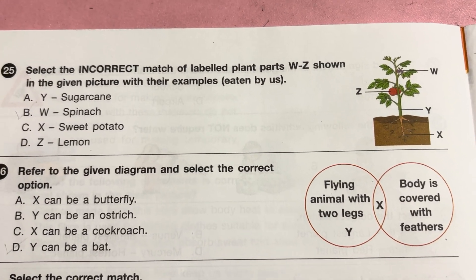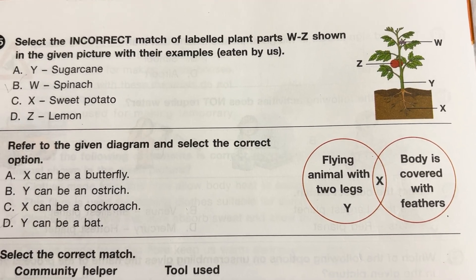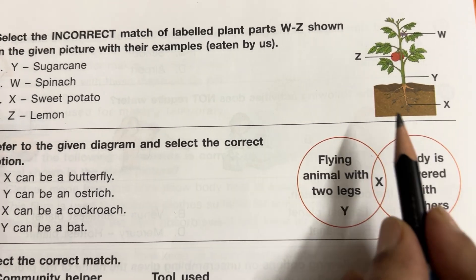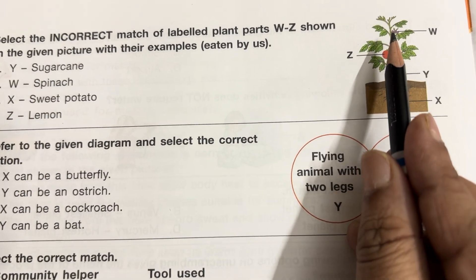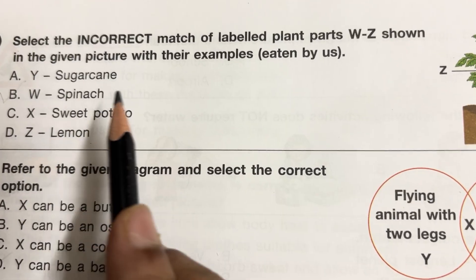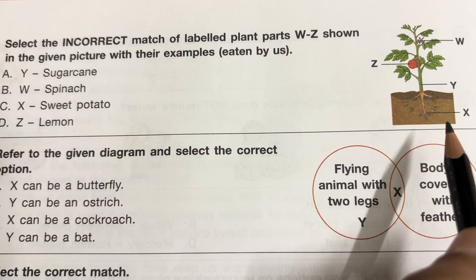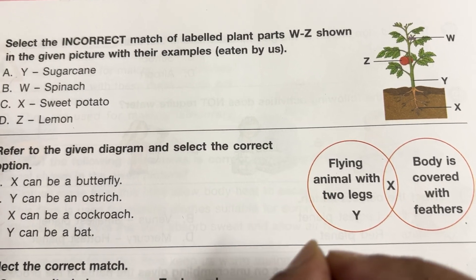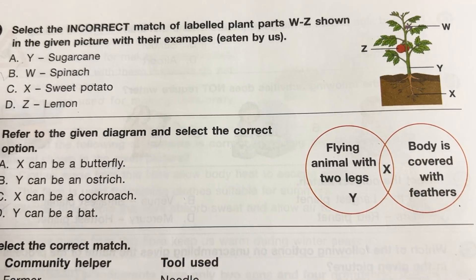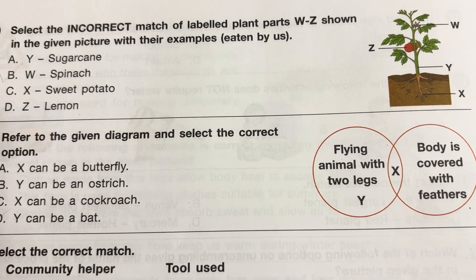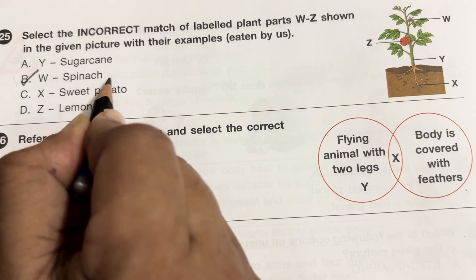Select the incorrect match of labeled plant parts W to Z with their examples. Y is the stem — sugarcane; we eat the stem of sugarcane — correct. W are the flowers — spinach — no, spinach is leaves; we eat the leaves of spinach — incorrect match. X is root — sweet potato — yes, we eat the root of sweet potato. Note: for regular potato we eat the stem, but for sweet potato we eat the root. Z is lemon — it's the fruit — true. So B is wrong: in the case of spinach, we eat the leaves, not the flowers.